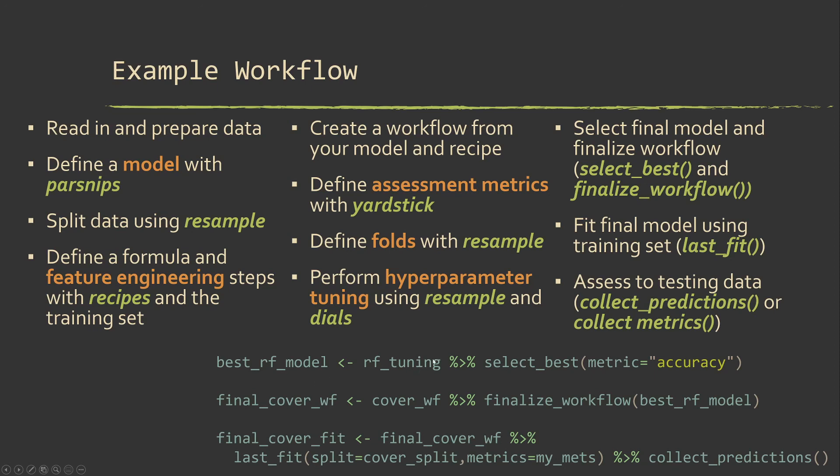So once we have the tuning done, we can create the final model by pulling out the best parameter. So here we're saying we want to get the parameters, the hyperparameters that provide the highest accuracy. And then once we have that, we can finalize the workflow. So we use our original workflow and we push this finalized model with our chosen hyperparameters into it to create this new final workflow.